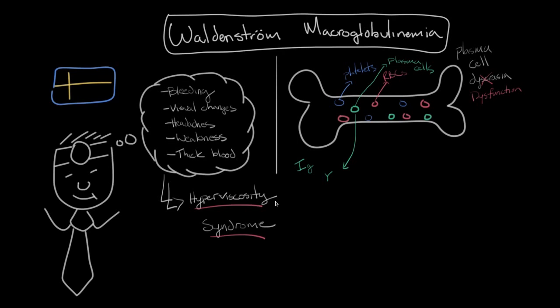Now what happens in Waldenstrom macroglobulinemia is that these plasma cell precursor cells, they become neoplastic or cancerous. And this means that they grow and replicate uncontrollably. So let me just draw that in here. And I'm going to represent these dysfunctional plasma cell precursor cells with a solid filled in circle. And so they replicate and grow.